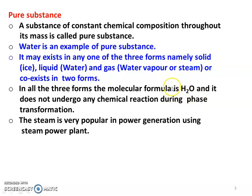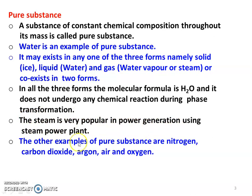In any condition or phase, the chemical formula remains the same — solid, liquid, or phase change — and such a substance is called a pure substance. Steam is very popular in power generation using the steam power plant. Other examples of pure substances are nitrogen, carbon dioxide, argon, air, and oxygen.